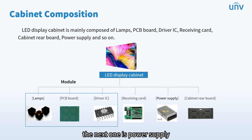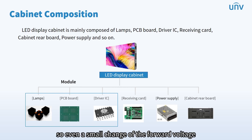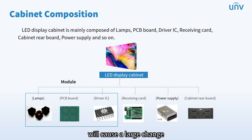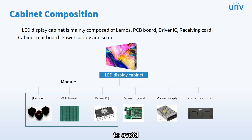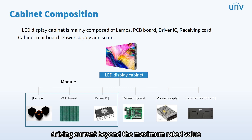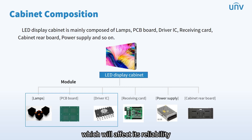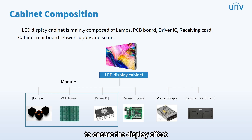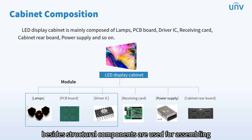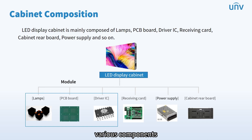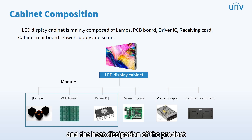The next one is power supply. Since LED is a non-linear device, even a small change of the forward voltage will cause a large change in the forward current. So it is necessary to avoid driving current beyond the maximum rated value, which will affect its reliability. To ensure the display effect, the LED current needs to be constant. Besides, structural components are used for assembling various components while ensuring the flatness of the module and the heat dissipation of the product.